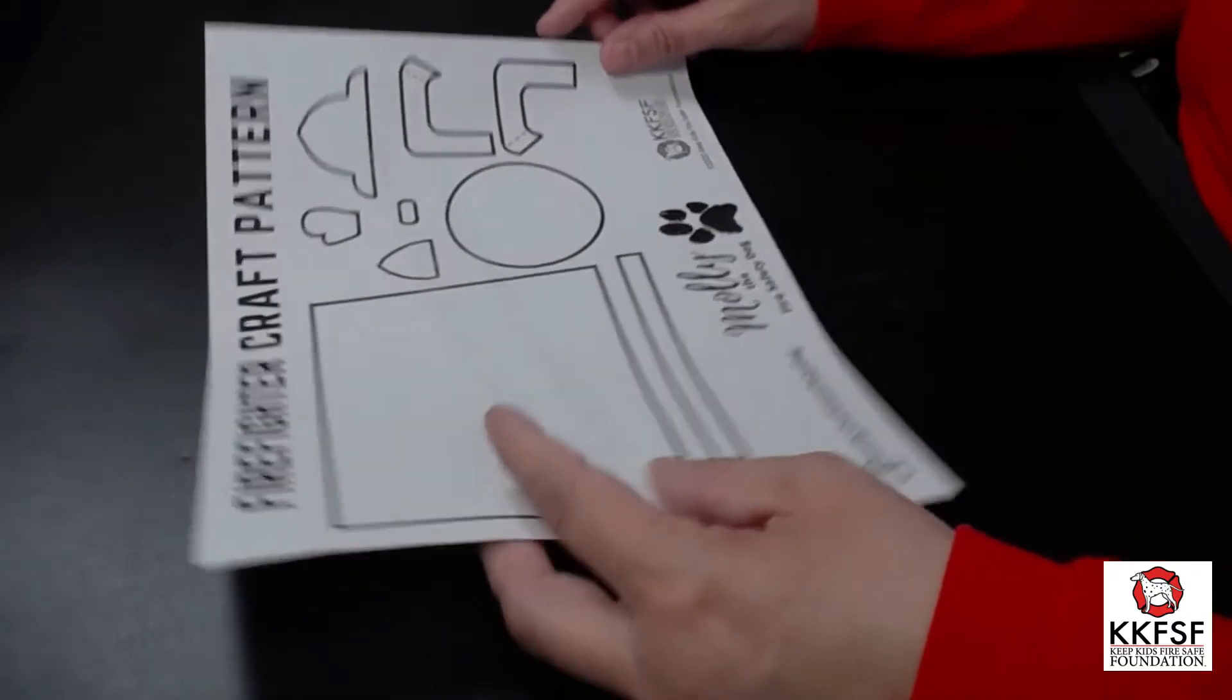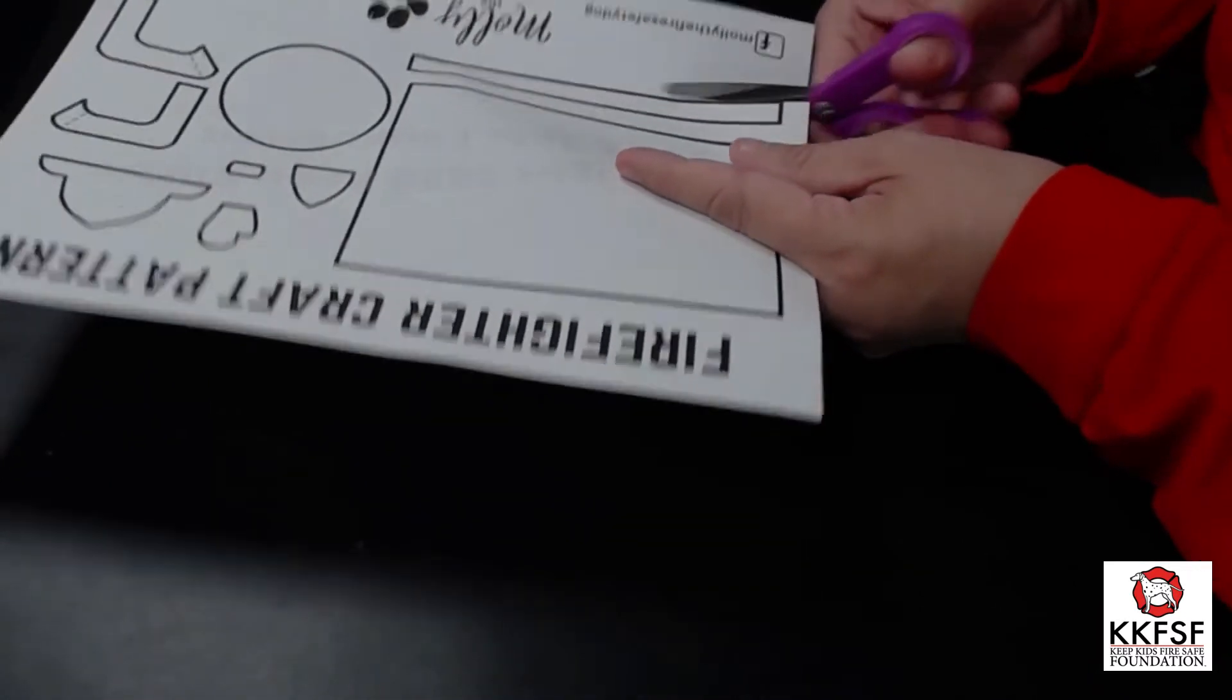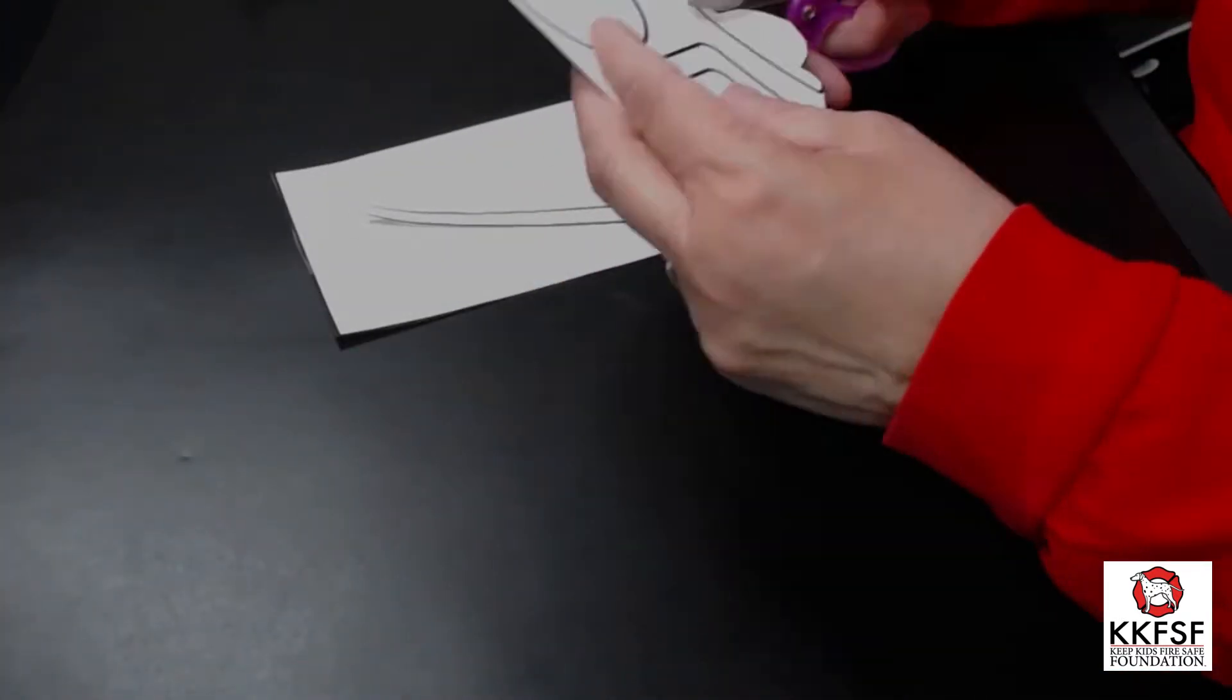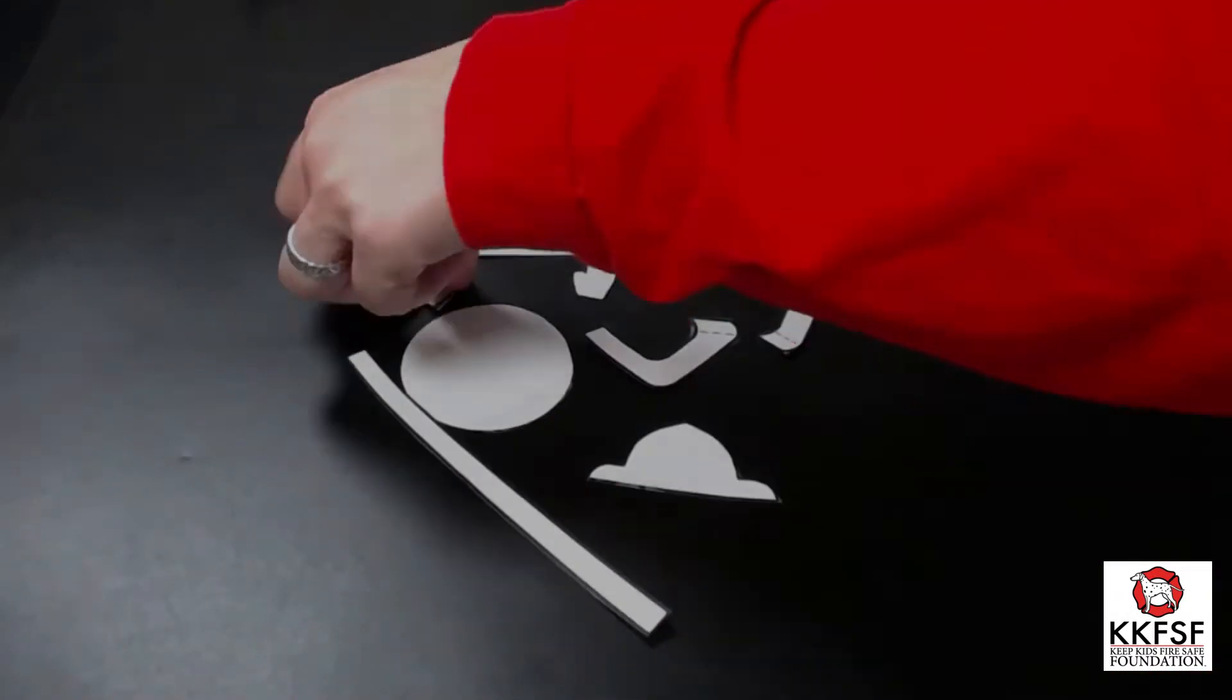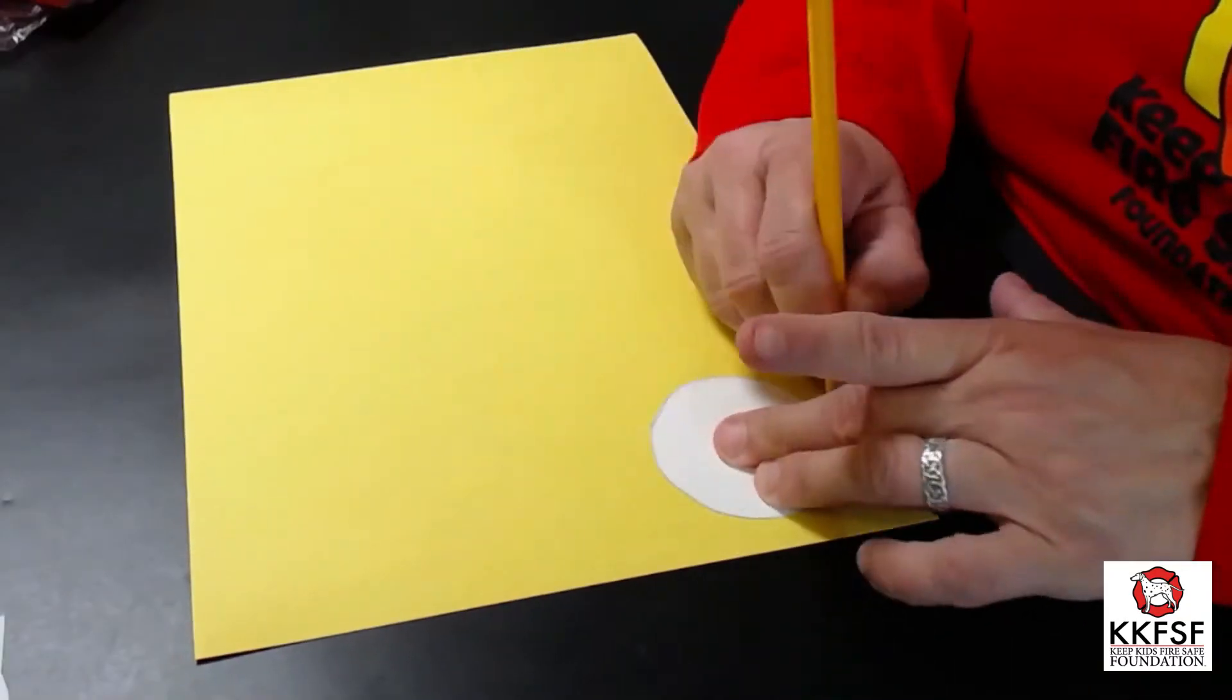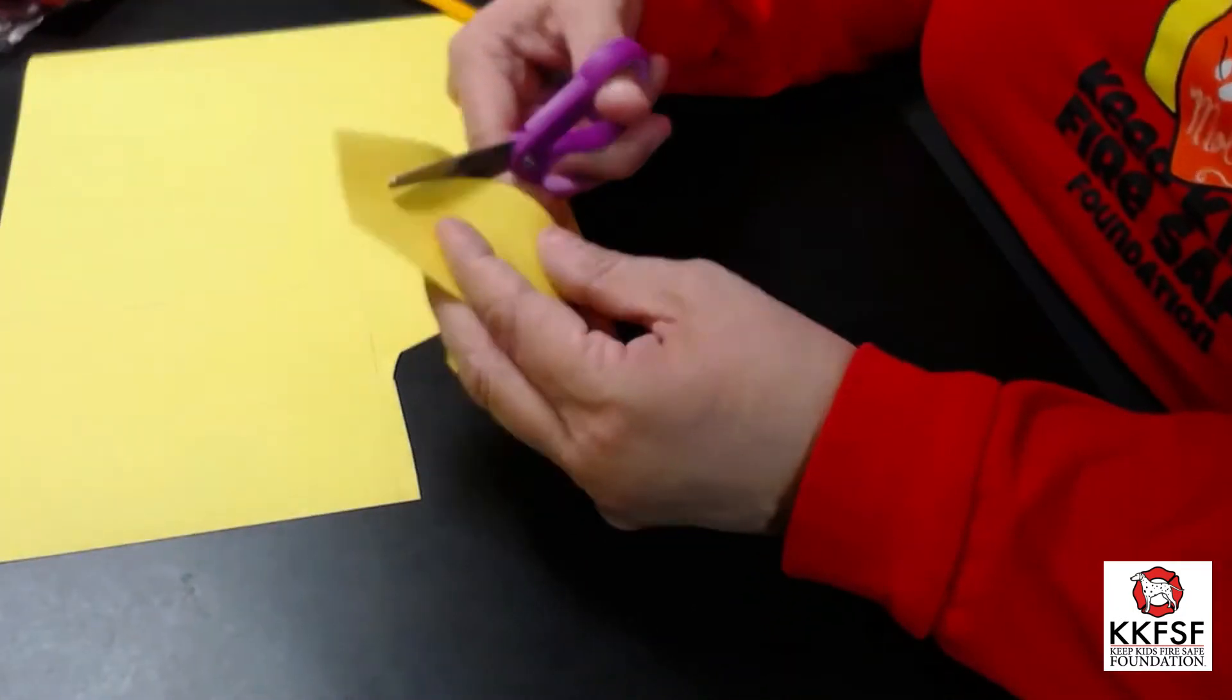First you want to take your pattern and start to cut out along the lines. If you need to have a grown-up help you, next take your pattern and trace onto the construction paper. Be sure to cut out each piece.